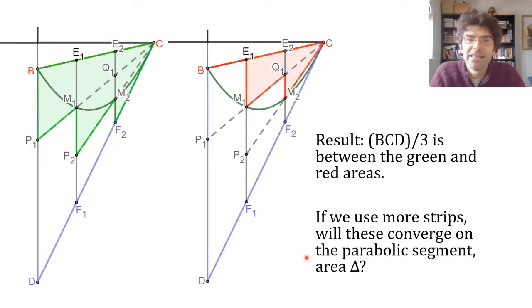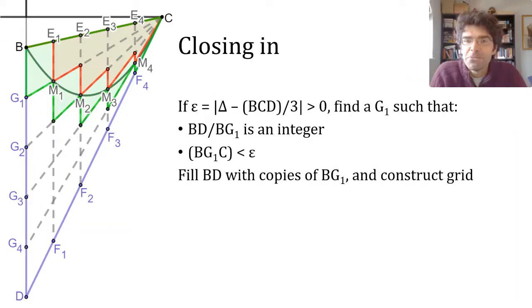Now, as usual, Archimedes has a neat proof by contradiction to show that this is in fact the case. Suppose, he says, the area of the parabolic segment is not actually a third of BCD.